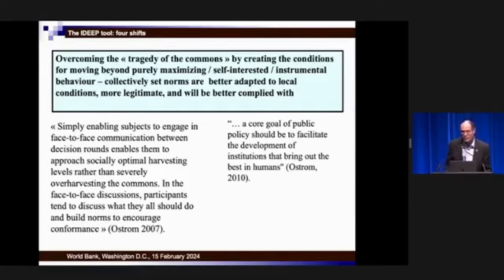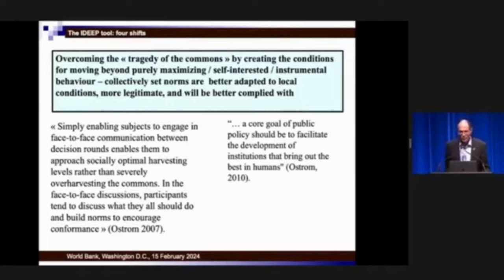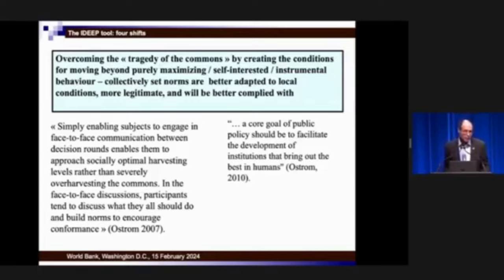And when she accepted the Nobel Prize in Economics, she said: 'A core goal of public policy should be to facilitate the development of institutions that bring out the best in humans.' The ID tool is not simply an aid to decision makers or simply a way to avoid committing mistakes. It's a way to empower people so that they will better apply the norms they have helped to shape, better understand the systems in which they operate, and be much better equipped to hold governments and service providers accountable. This is why we believe this is only a first step towards something really important — because if we take seriously the huge and untapped potential of participation of people in poverty in shaping decisions, we will, I assure you, be much better in what we are doing. Thank you.